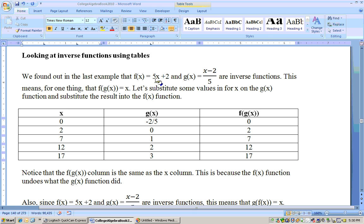Minus 2 fifths times 5 is minus 2. Minus 2 plus 2 is zero. Let's do one more and make sure you see what's going on.